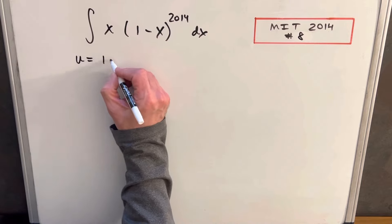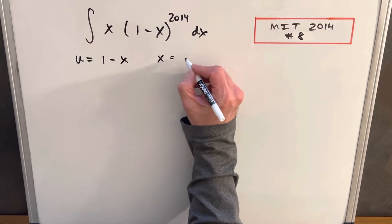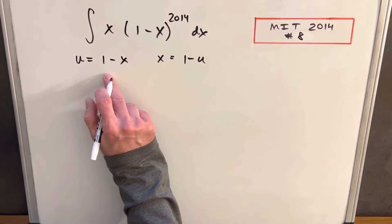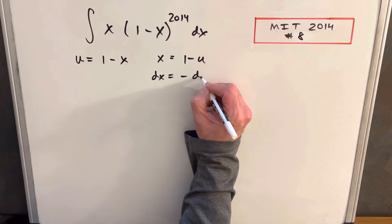If we make u equal to 1 minus x, then x is going to be 1 minus u, just rearranging this. Taking a derivative, dx is going to be minus du.